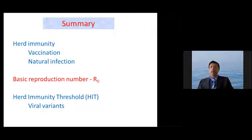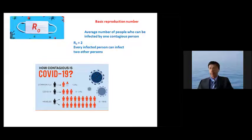So what is the basic reproduction number? It is the average number of people who can be infected by one contagious person. So if the R0 is 2, every infected person can infect two other persons. And the R0 is given for the different conditions. The common flu, it's about 1.3. For COVID, it's about 2 to 5. And measles, the R0 is very high. It's a very contagious condition. It is about 15 to 18, as shown in the figure.